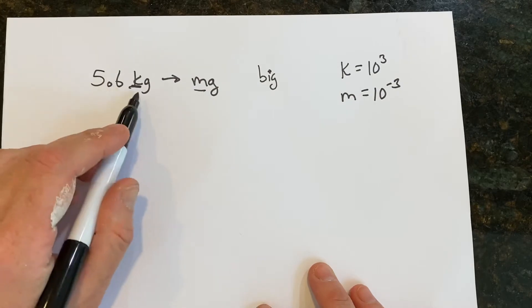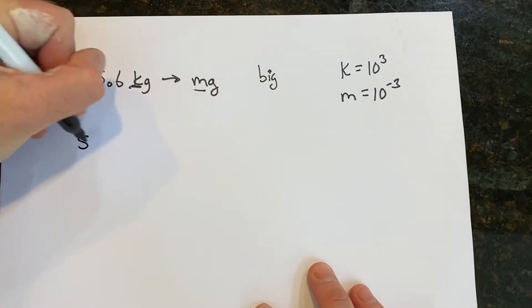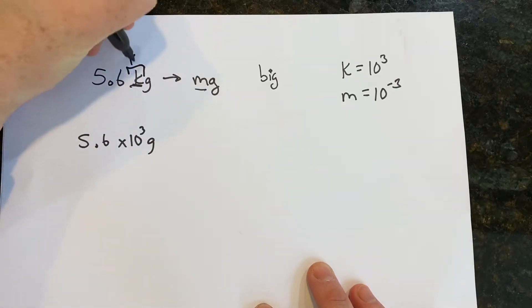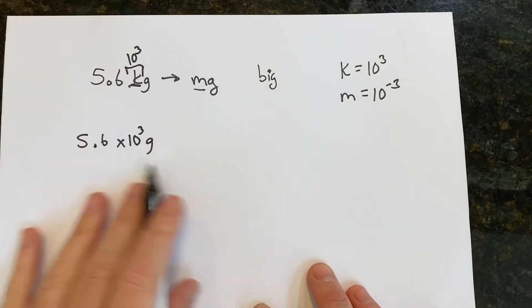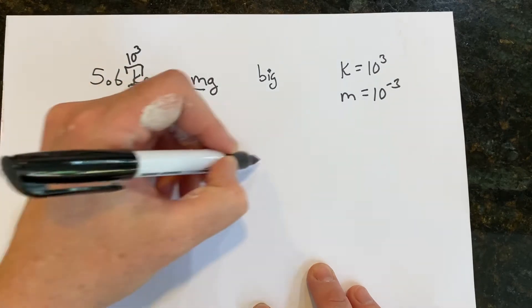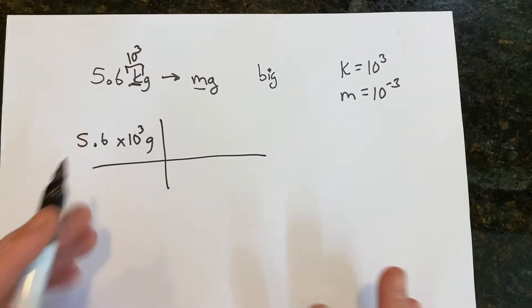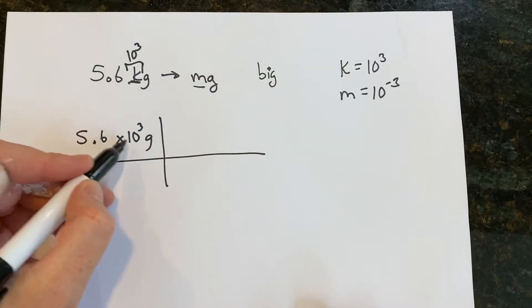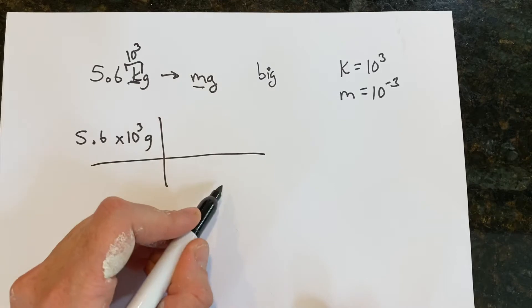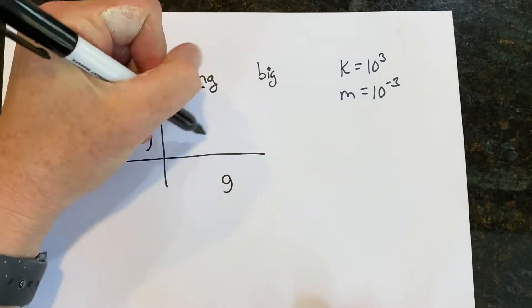So when I say 5.6 kilograms, I'm actually saying 5.6 times 10 to the third grams because kilo is 10 to the third. So you want to start kind of right here and this is the way I teach you in the lecture. You want to make sure that you avoid doing an extra step by replacing that kilo with 10 to the third. Now we're in gram town. If this is grams, we have to put grams down here and we want to turn it into milligrams.